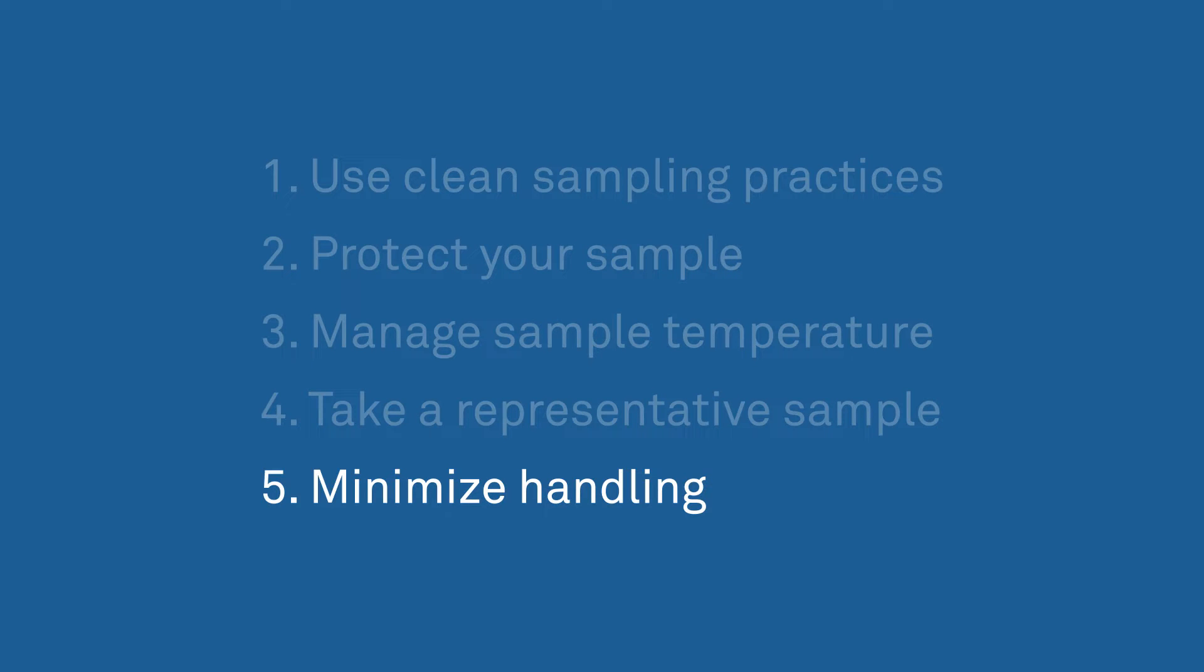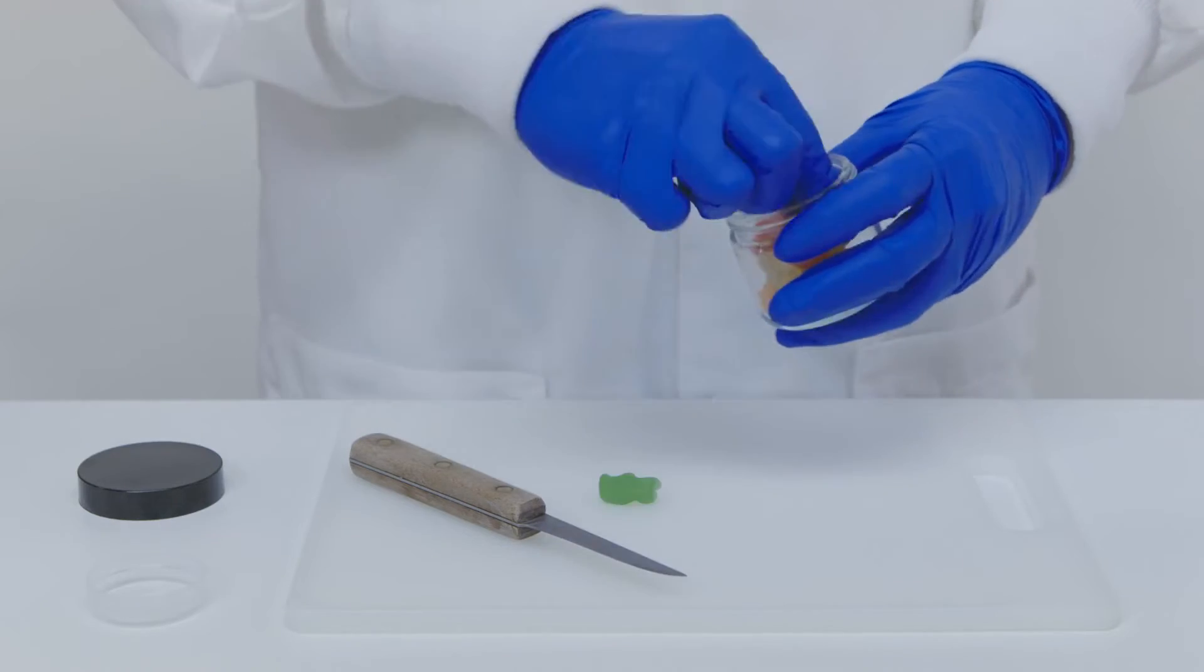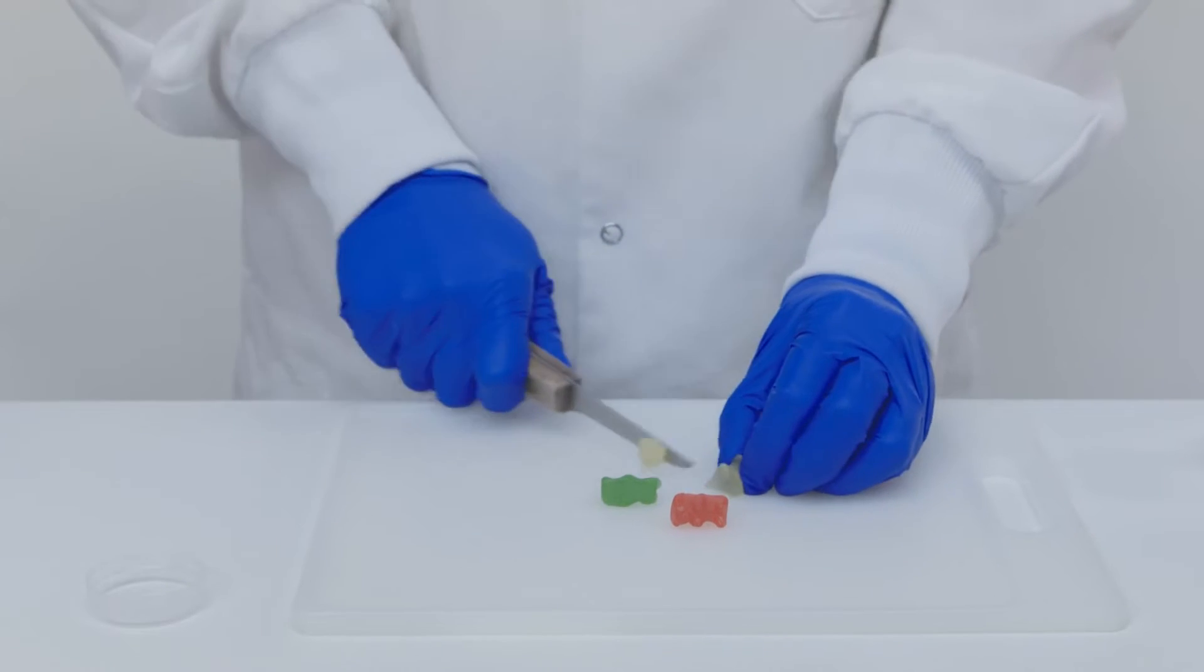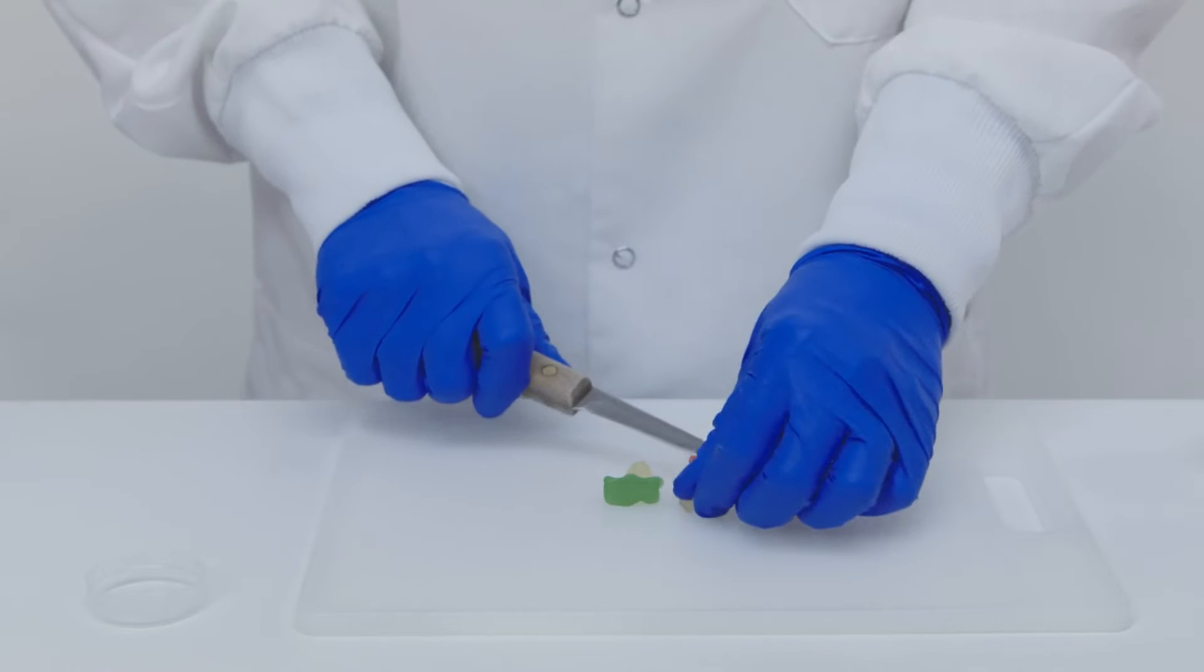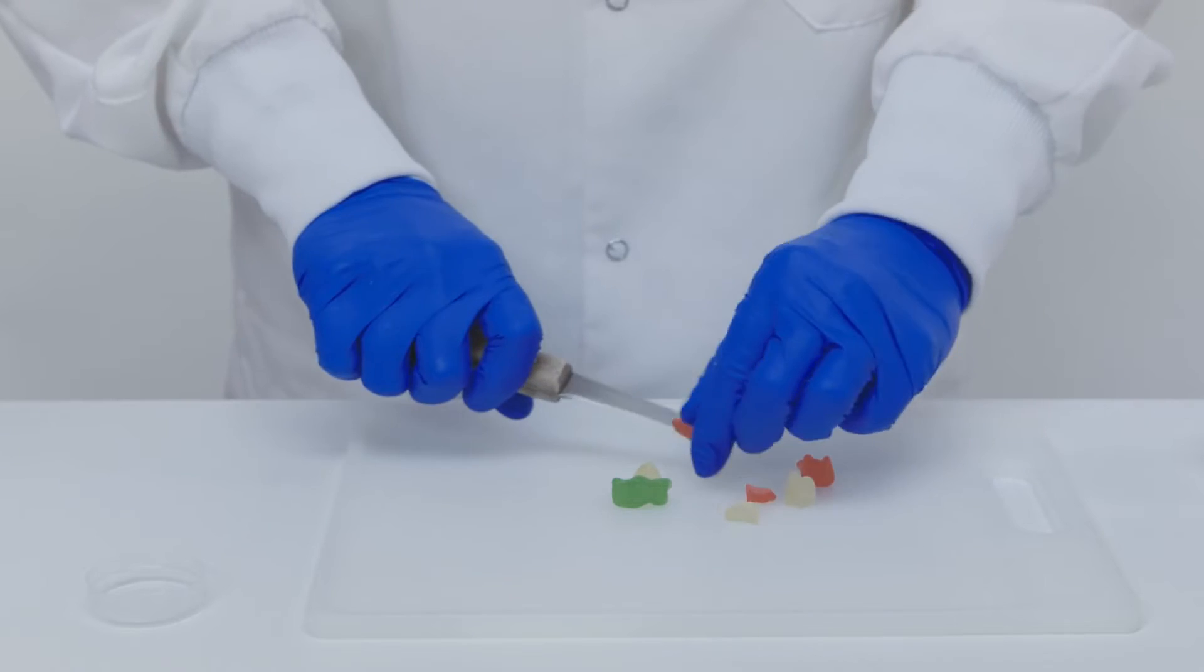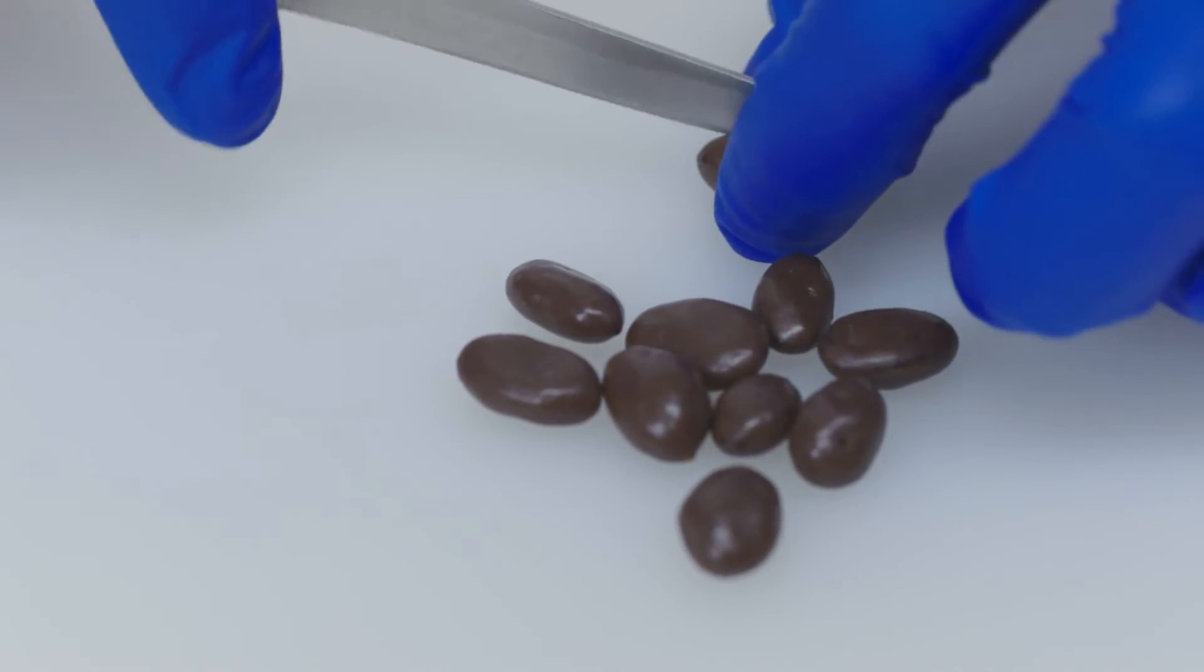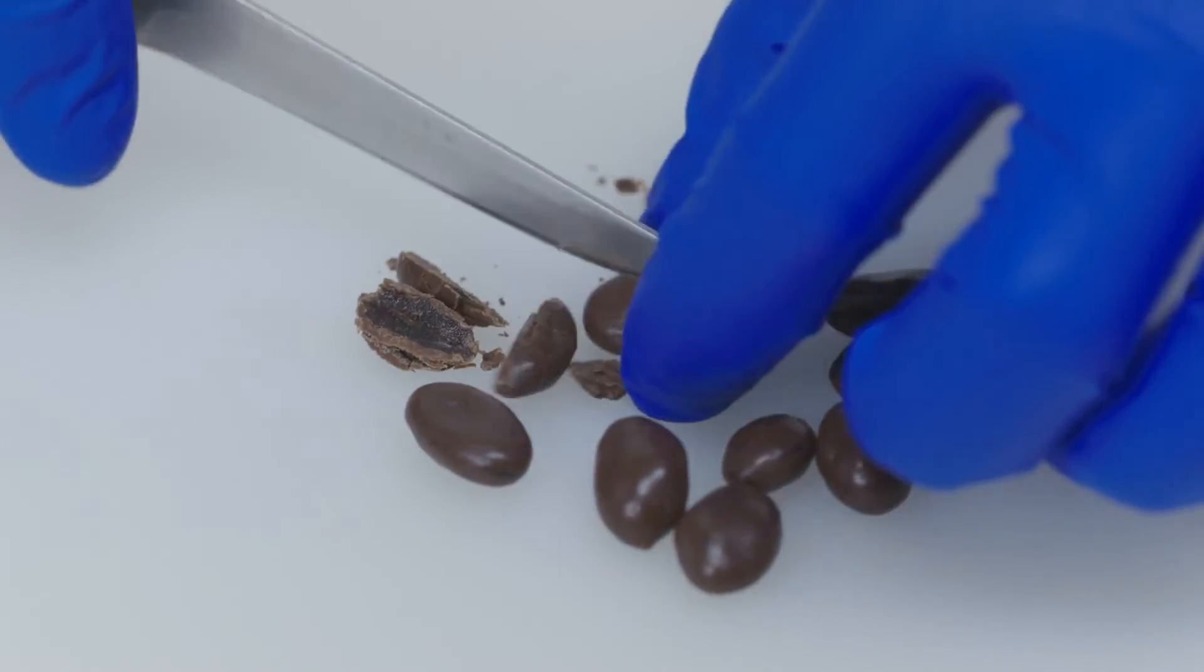Minimize handling. In sample preparation, less is more. We've seen customers use all kinds of sample prep methods over the years, including grinders, food processors, and blenders. There are two problems here. First, the friction of the grinding process heats the sample, driving off moisture and changing its water activity. Second, the increased surface area means that the product loses or gains moisture more quickly, making it more susceptible to the effects of room humidity.